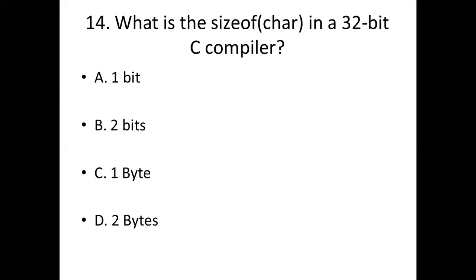14th bit. What is the size of char in a 32 bit C compiler? Option A, 1 bit. Option B, 2 bits. Option C, 1 byte. Option D, 2 bytes. Answer is the same. Option C, 1 byte.